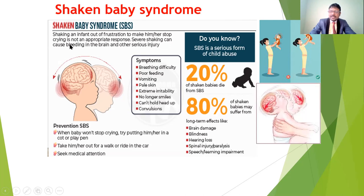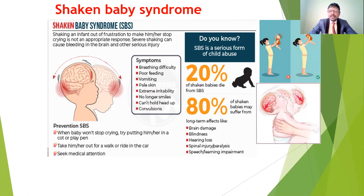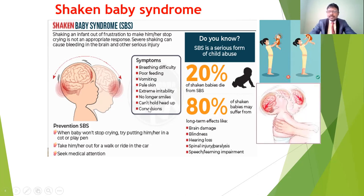If the baby gets shaken baby syndrome, they will have many complications. We can understand this if the baby is not feeding properly or has breathing difficulties. The most common symptoms of shaken baby syndrome are breathing difficulty, poor feeding, altered breathing or dyspnea, inability to take feed, crying, vomiting, pale skin, extreme irritability, no longer smiling, inability to respond, inability to hold the head up, and convulsions, fits, or seizures.